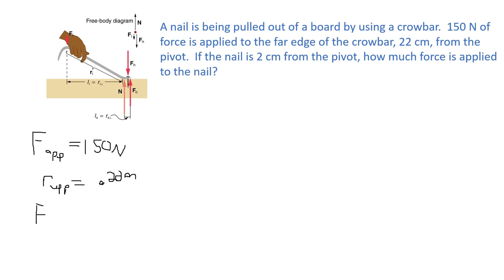Now the nail force applied to the nail, I'll do F_N for nail, is unknown but we know the distance of the nail from the pivot point is two centimeters. Again I will put that into SI units, 0.02 meters, so I do not forget.